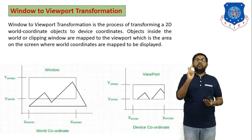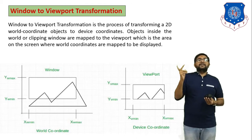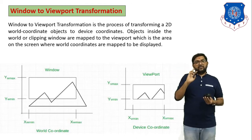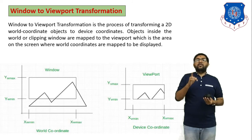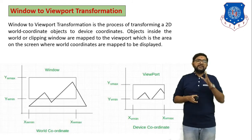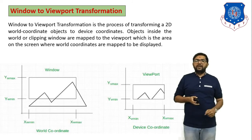In window-to-viewport transformation, the x and y coordinates generate new positions. In the next figure, the values of the x and y coordinates change according to the selected portion.